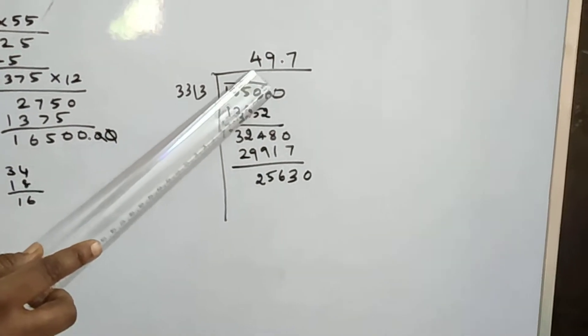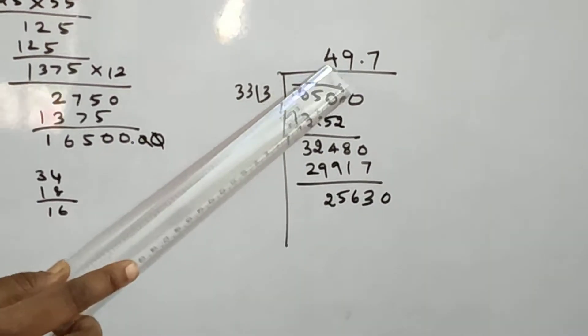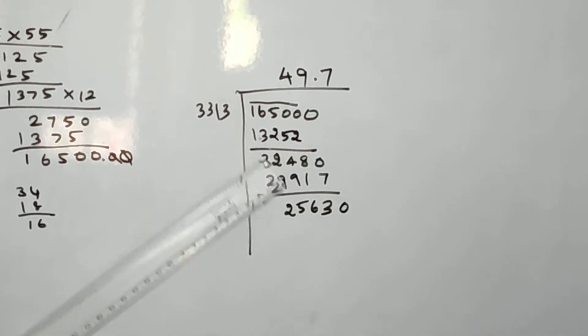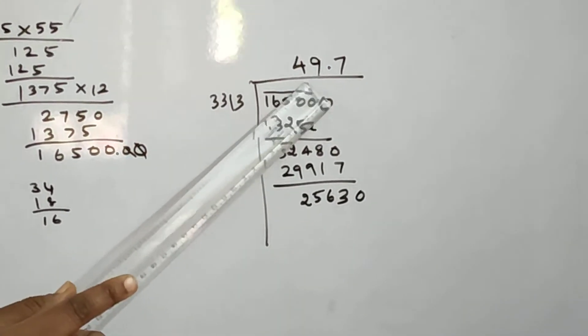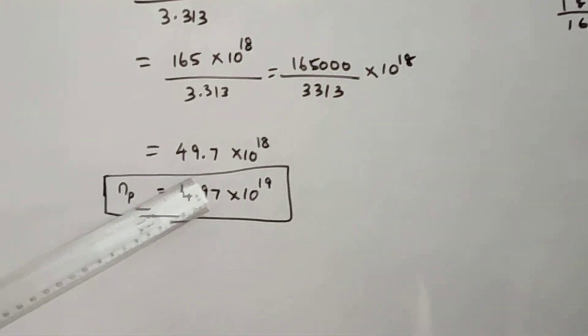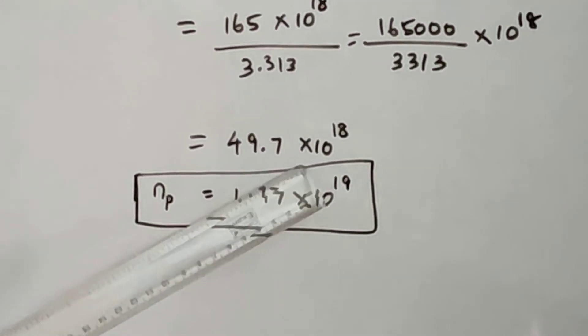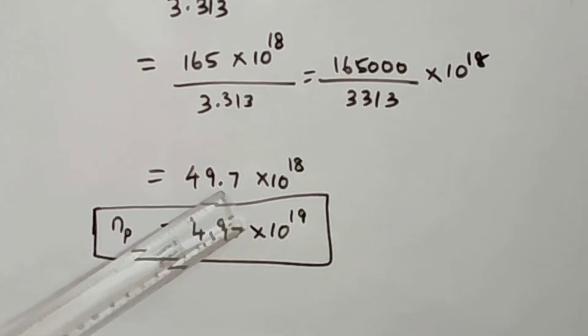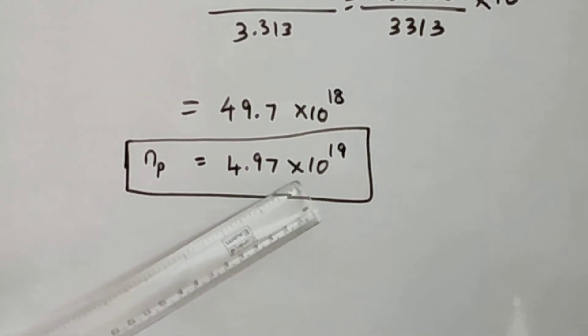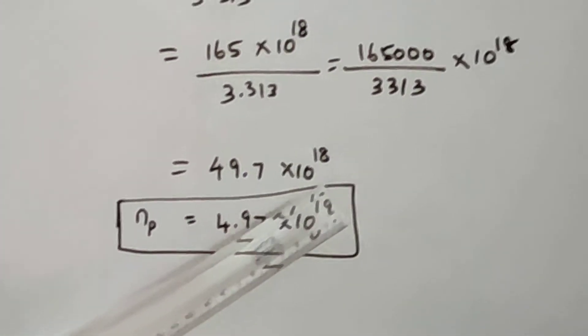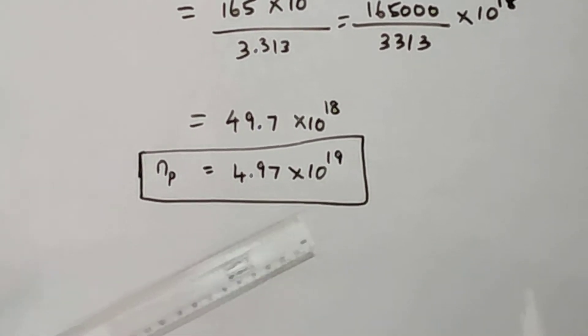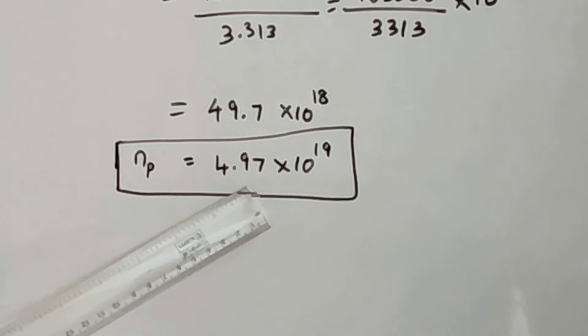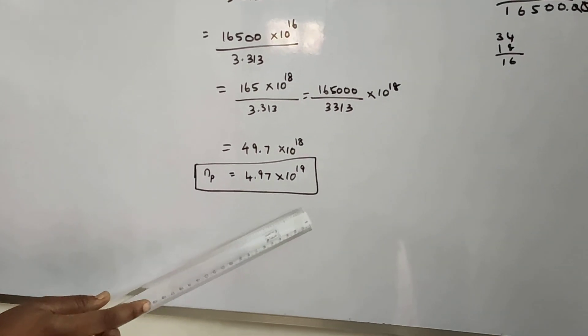16500 divided by 3313 equals 4.97, so 49.7 times 10 to the power of 18, or moving the point to the left side, 4.97 times 10 to the power of 19. So number of photons emitted equal to 4.97 times 10 to the power of 19.